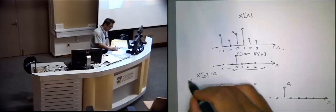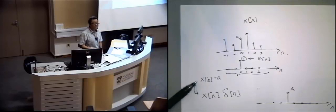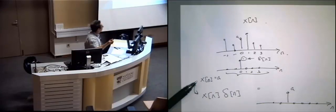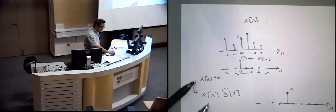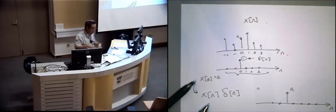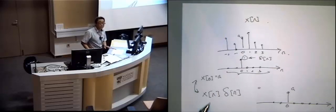So be careful about this. They are not the same. Here, I get the value x of zero, and I give you a number a. Okay? Here, I give you not a number. I give you a function that has all the zeros except at the point n equals to zero. Okay?